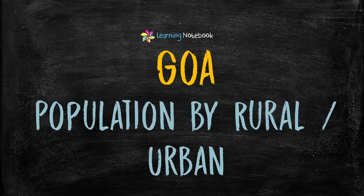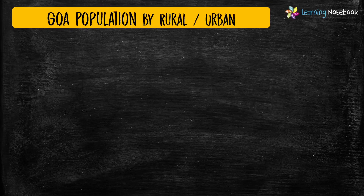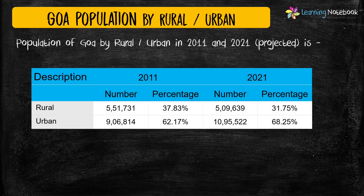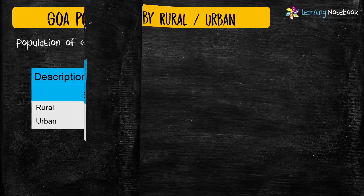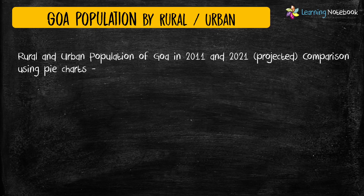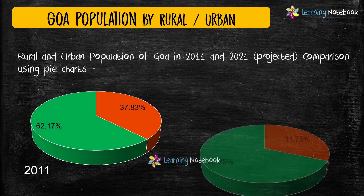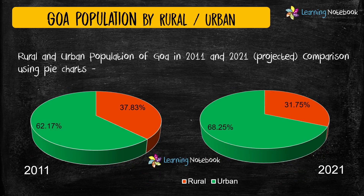The next idea for your Maths Art Integrated Project is population of Goa by rural and urban division. See how we have used two pie charts to compare rural and urban population of Goa for two years.